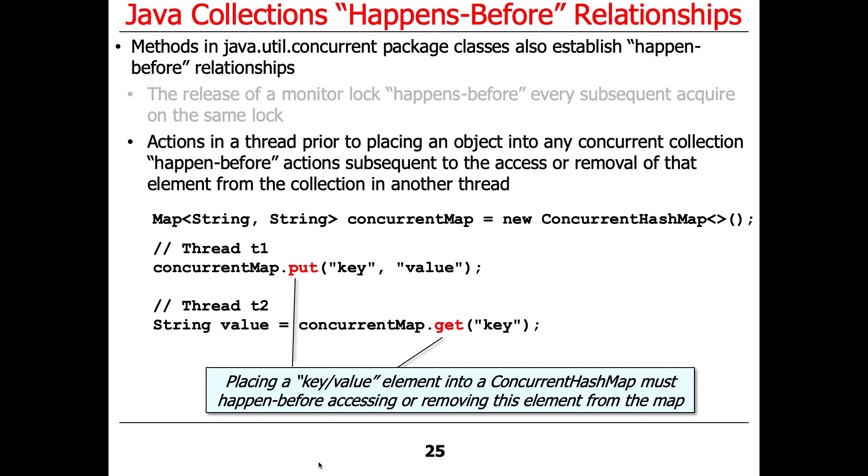It has to be then pushed out to other threads such that if thread two comes along and then gets that key, it'll get the value that was put in here in thread T1. And without the assurance that happens-before relationships exist, you could end up with the key visible but not the value.